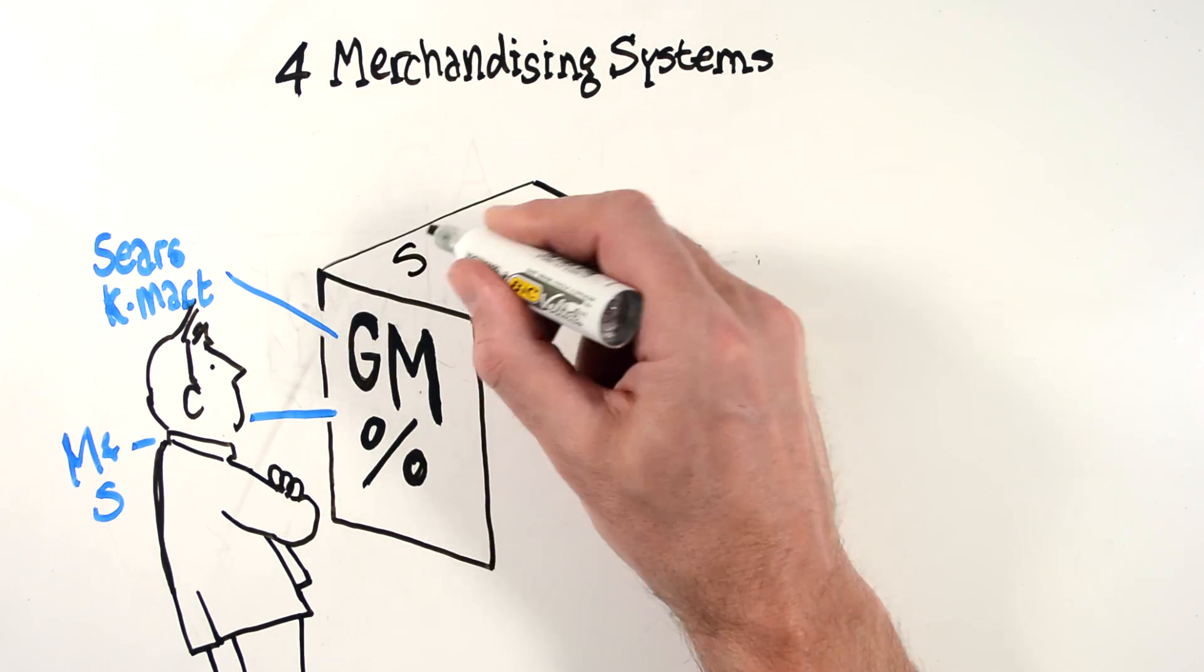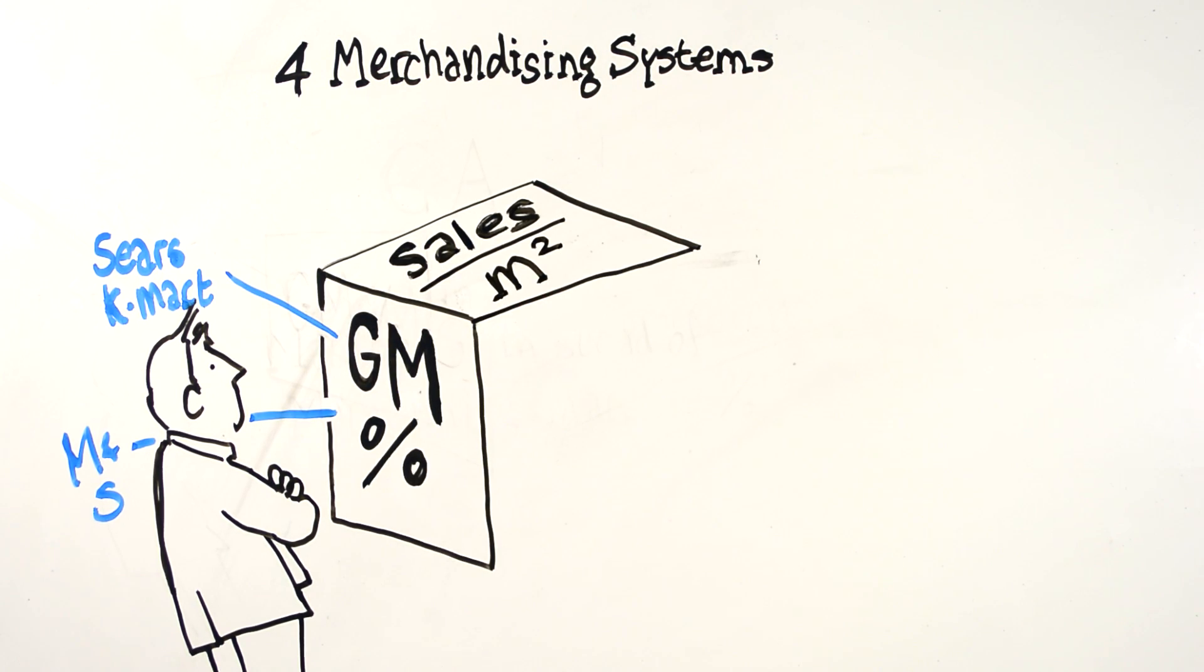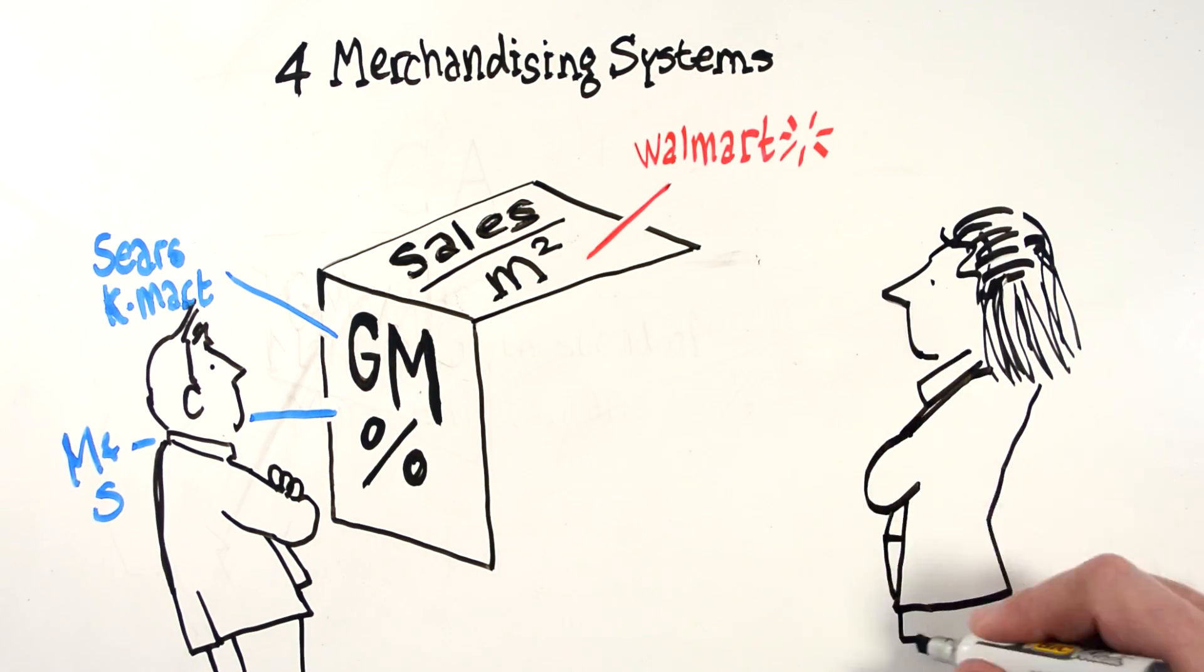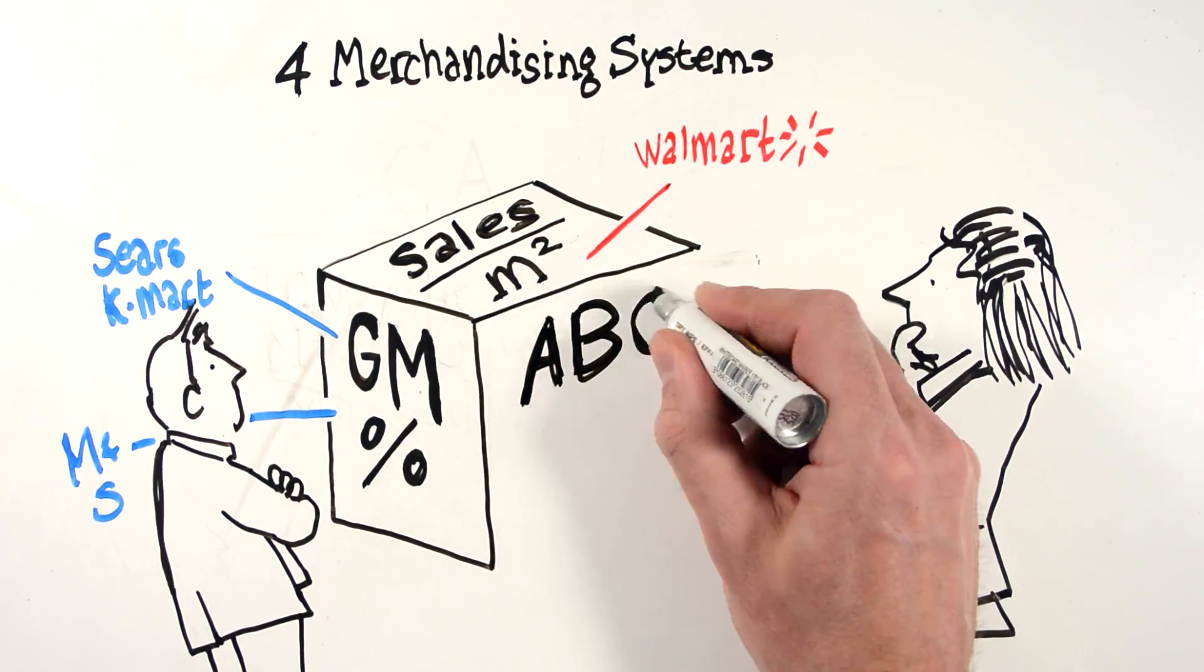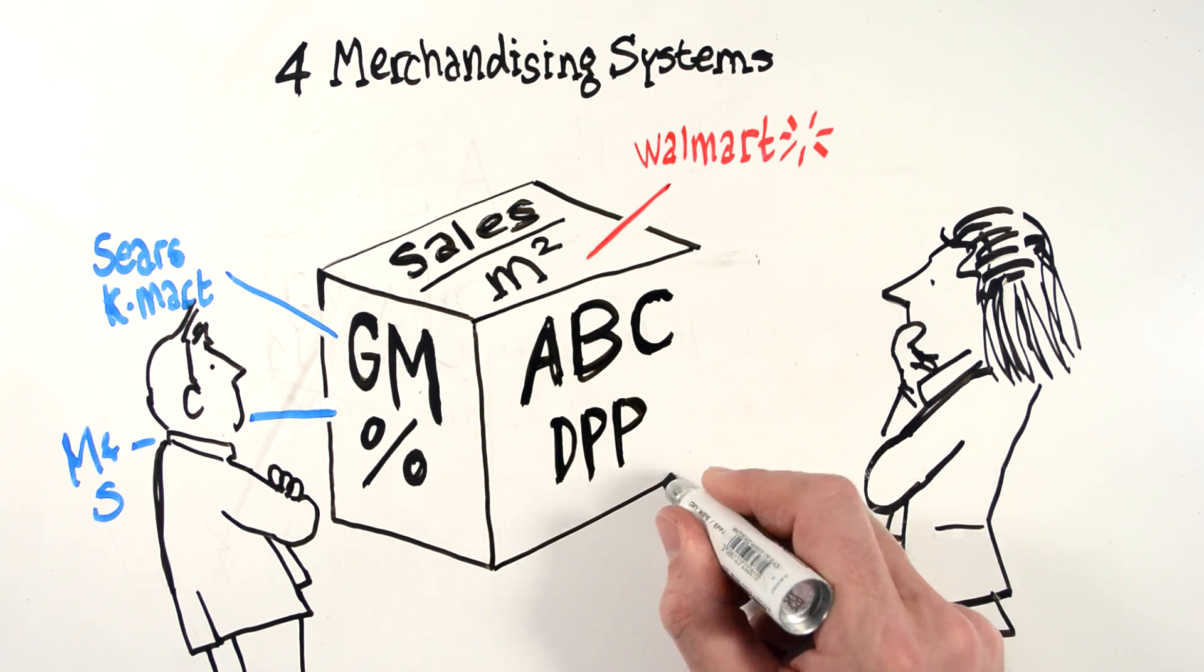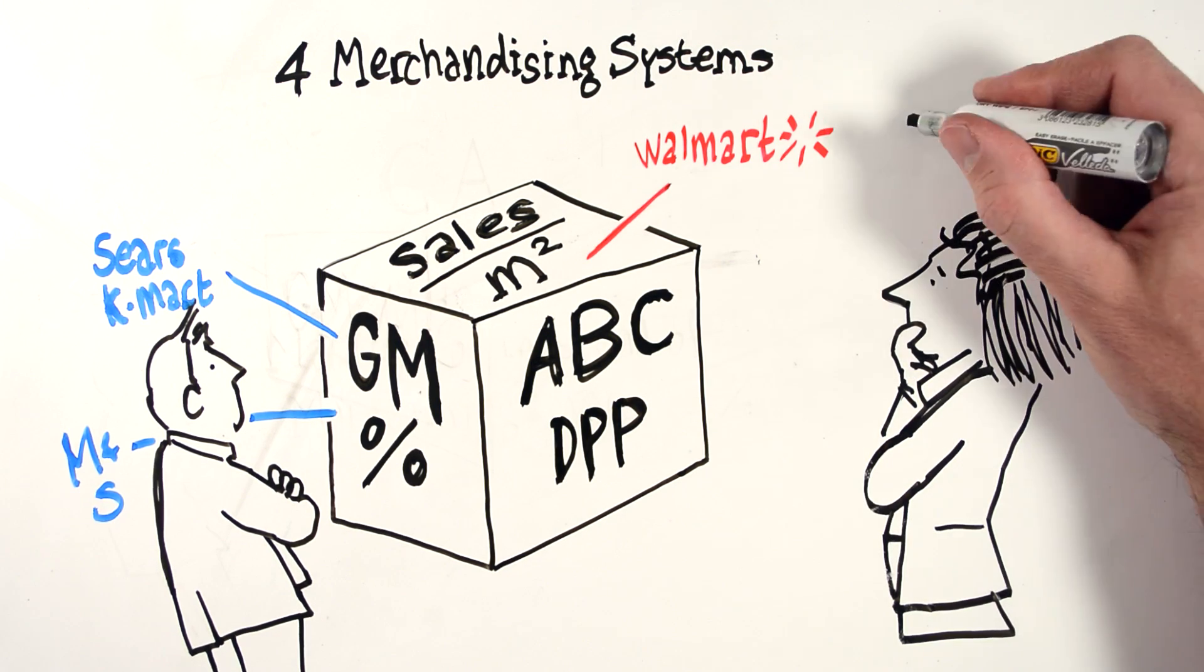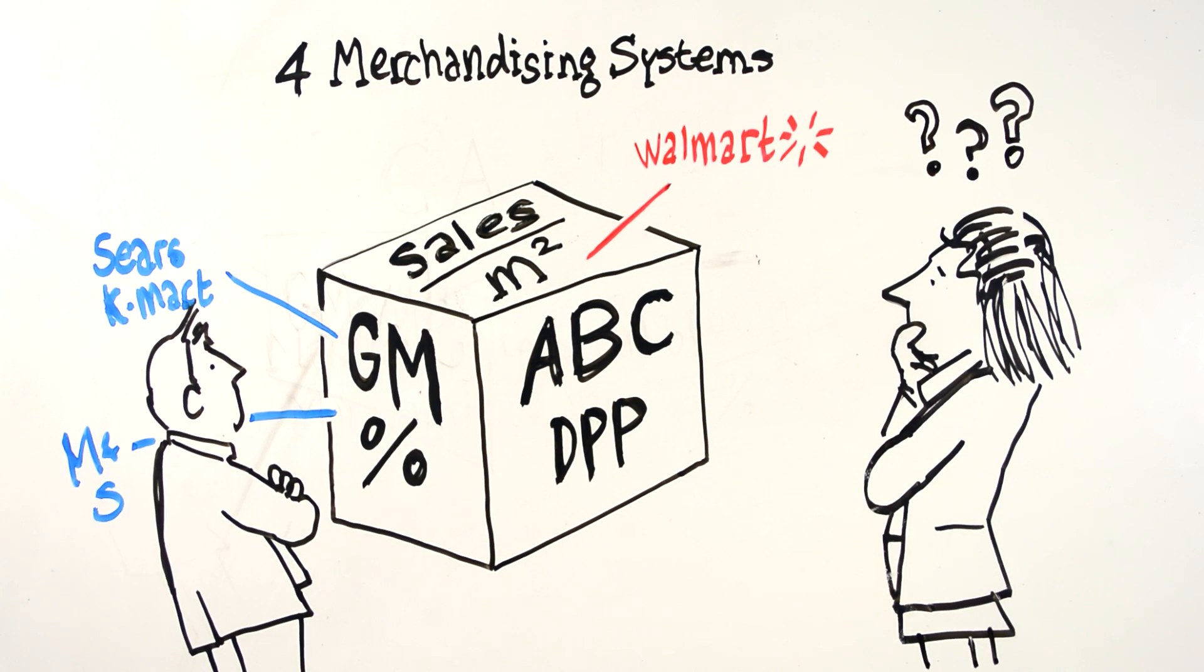The second system is increasing sales per square foot. This is what Walmart does. The third is trying to calculate the profitability of each individual product through activity-based costing or direct product profitability. It is so complex that few retailers have been able to implement it.